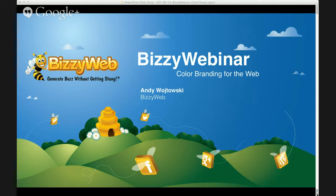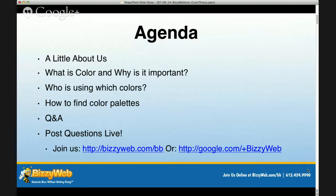As we get started, we'll go through the agenda just so everybody's aware of what we're going to be doing today. We're first going to go through a little bit about BusyWeb — who we are, what we do, and how we can help you. Then we'll get right into color and branding for the web: what is color, why is it important, who is using which colors for their branding on their sites and in their logos, and how to find color palettes that fit what you need for your branding. After that we'll have an open question and answer session, and then we'll go live with this on the web.